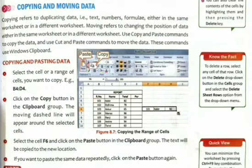Then select cell F6 and click on the paste button in the clipboard group. The text will be copied to the new location. So we are moving the copied content to a new location, that is F6. We will place our cursor there and then click on the paste button that is present on the clipboard group.